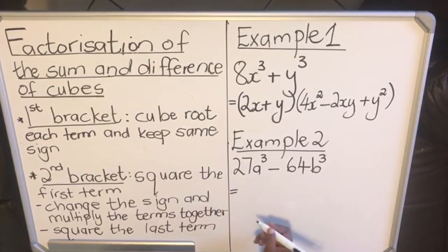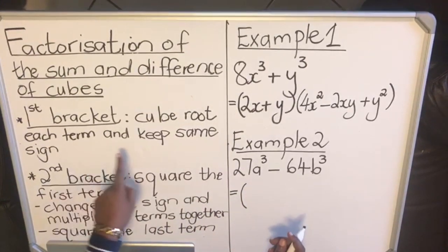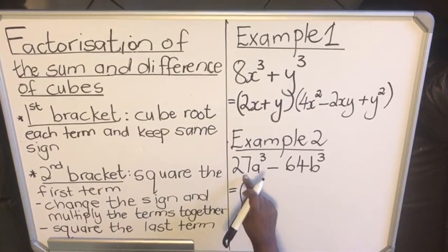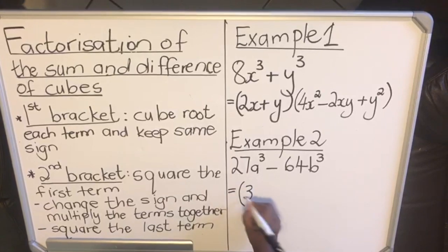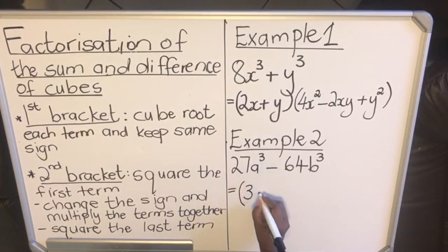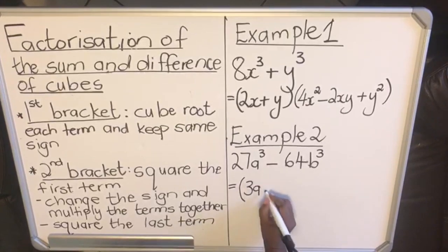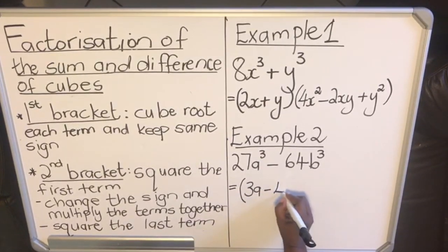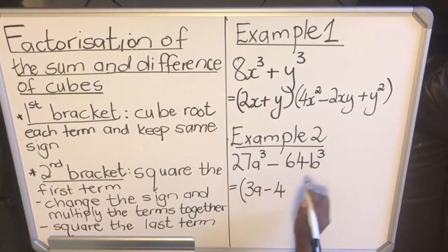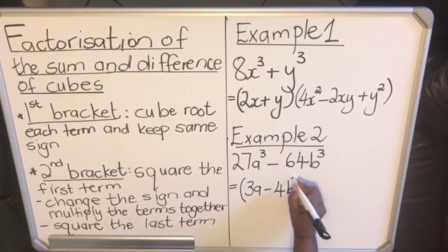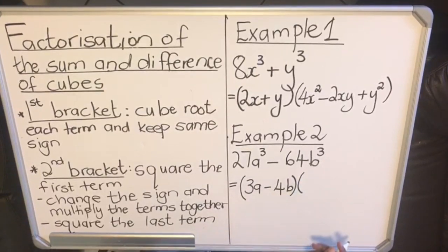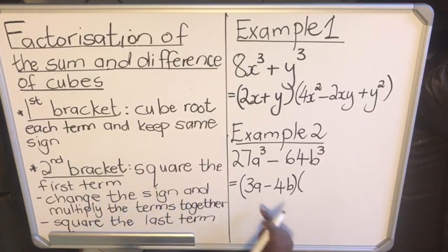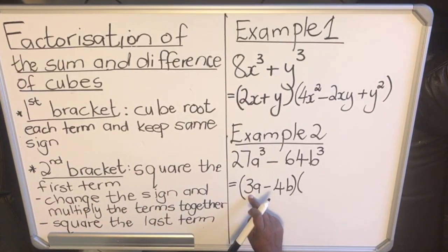Here's the solution. According to the rules, in the first bracket we must cube root the first term and the last term. The cube root of 27 is 3, the cube root of a³ is a, and then we keep the same sign minus. The cube root of 64 is 4 and the cube root of b³ is b. Right, we're done with the first bracket.